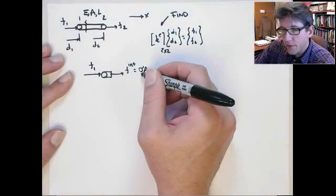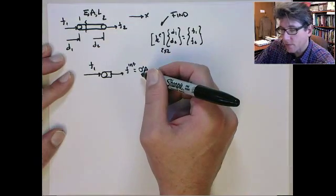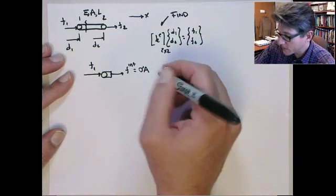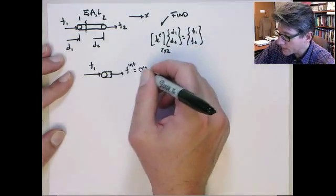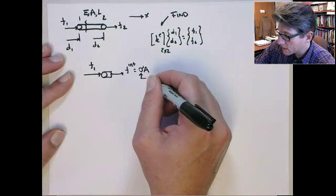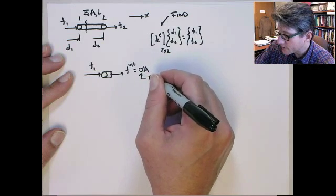We don't want to deal with the stress as the unknown variable. We need to get the stress in terms of the nodal displacements. So that's quite easy. The stress, using Hooke's law, is Young's modulus times the strain.